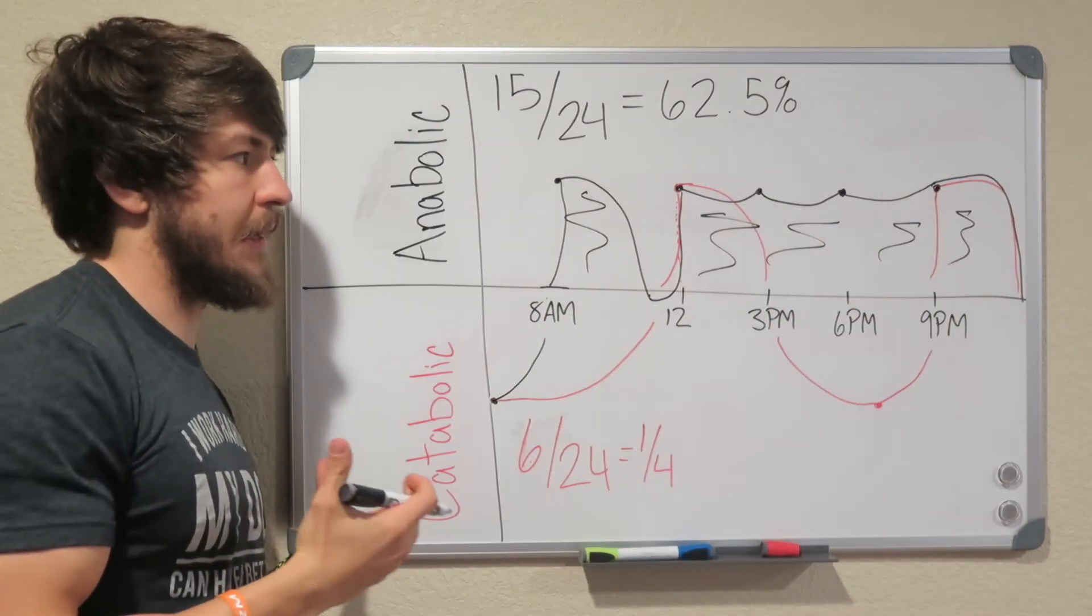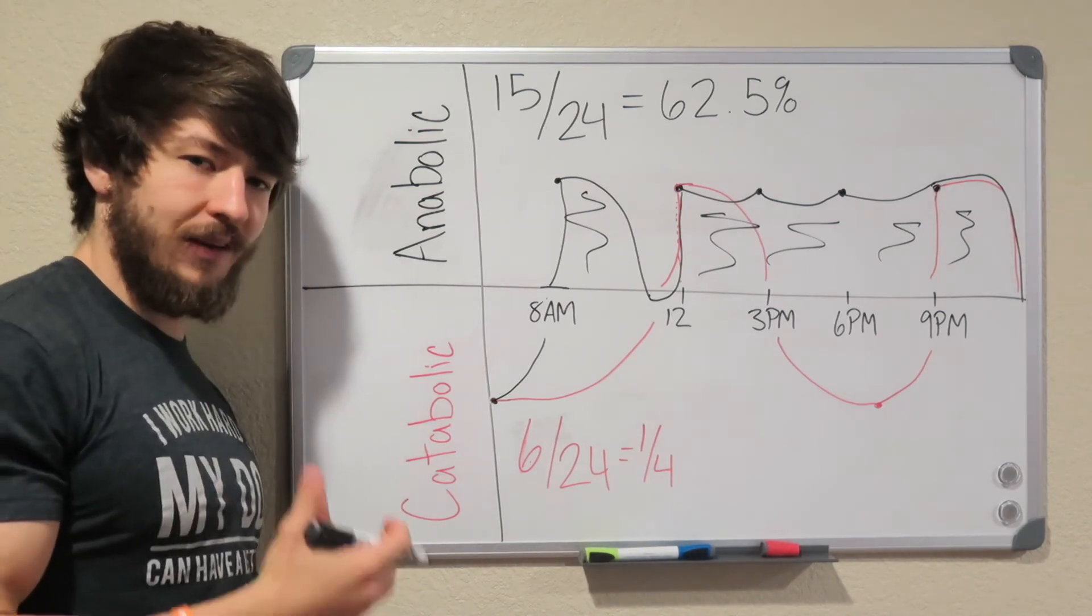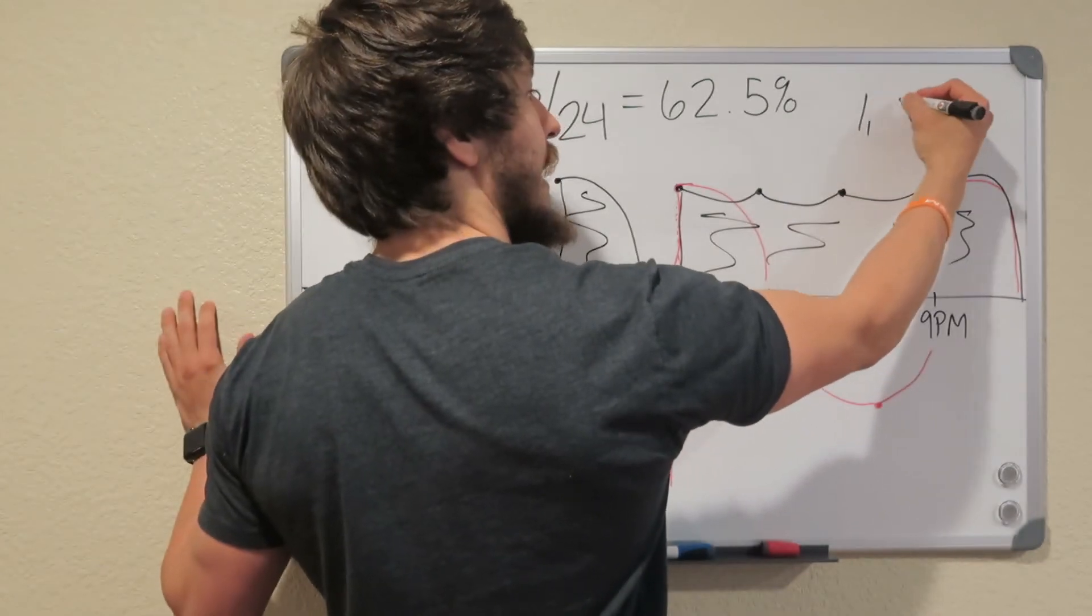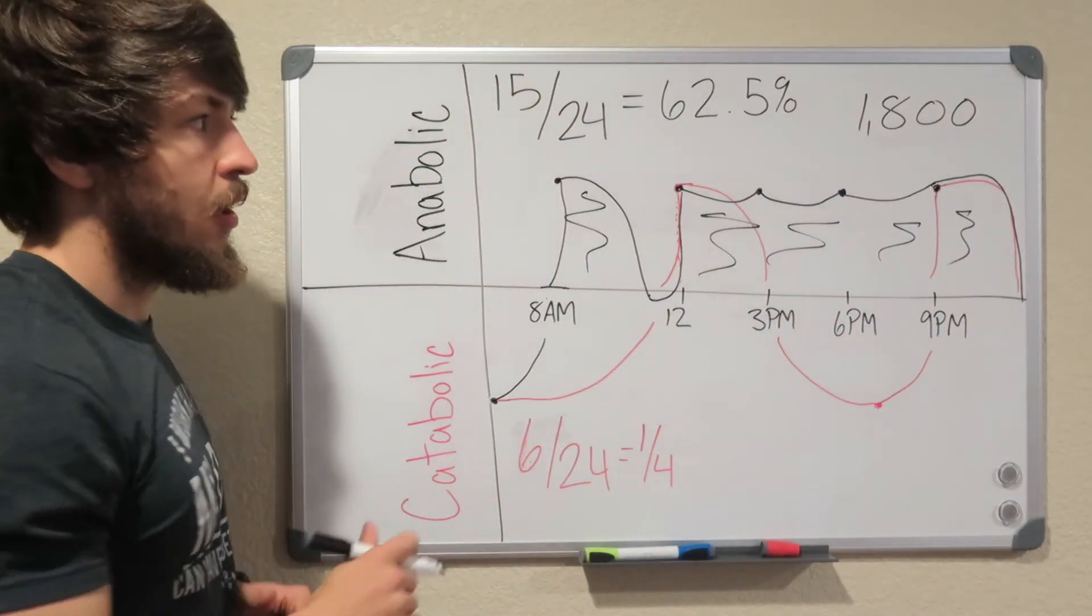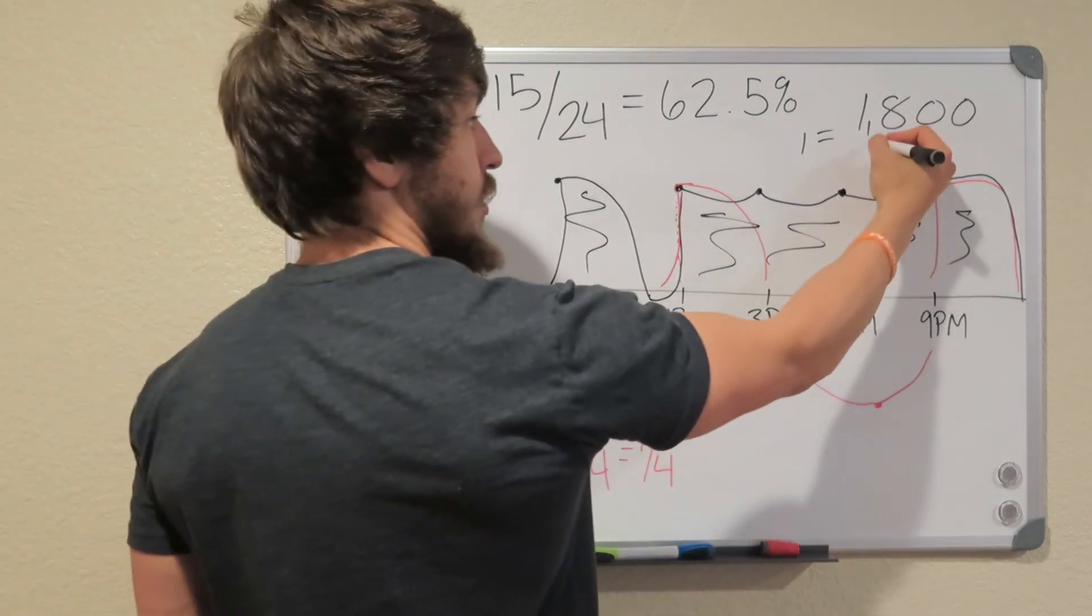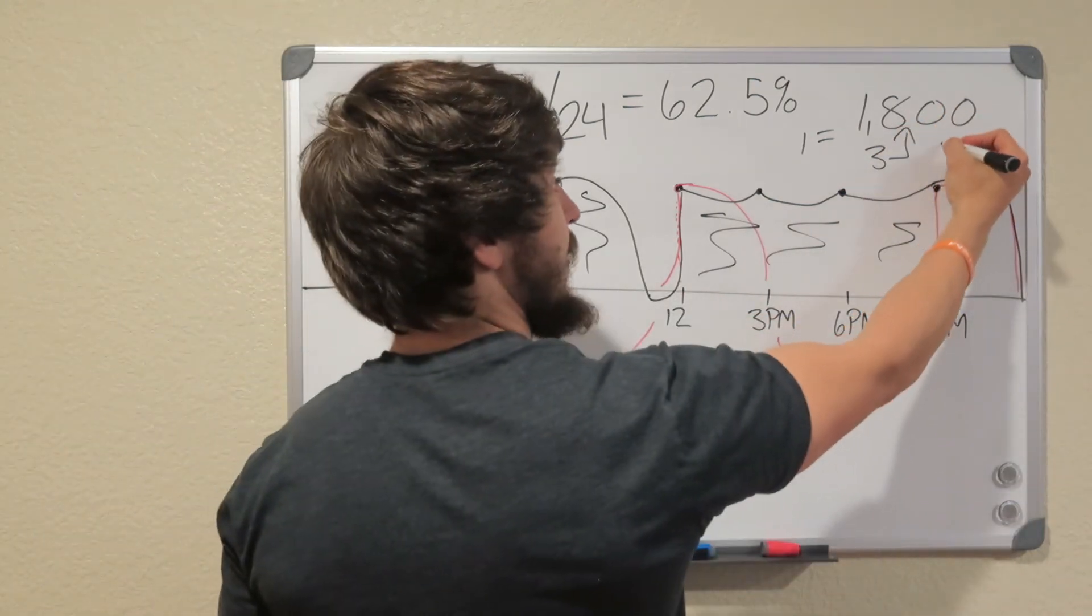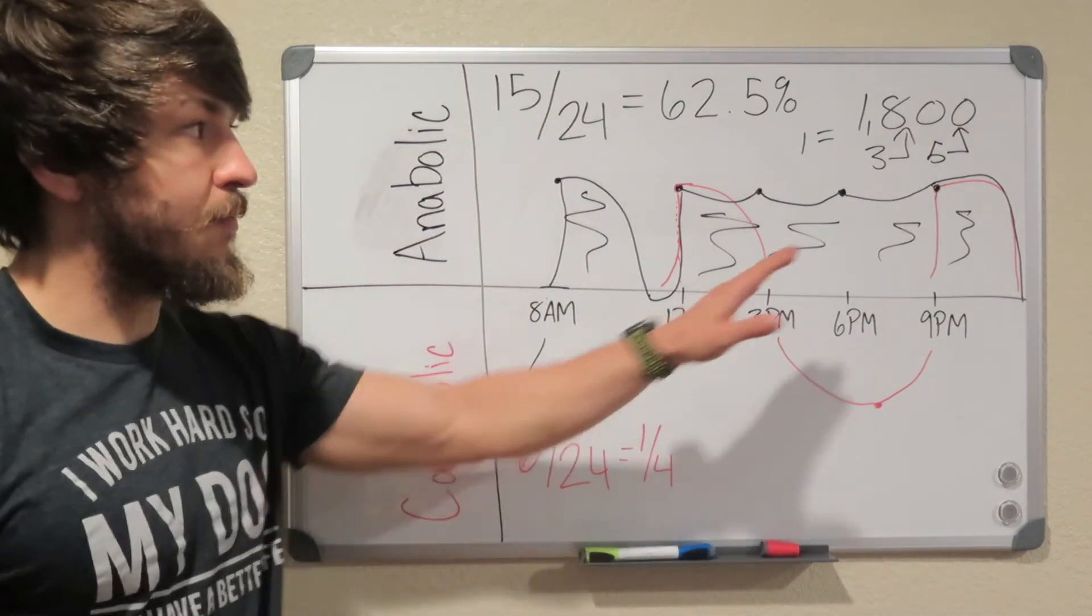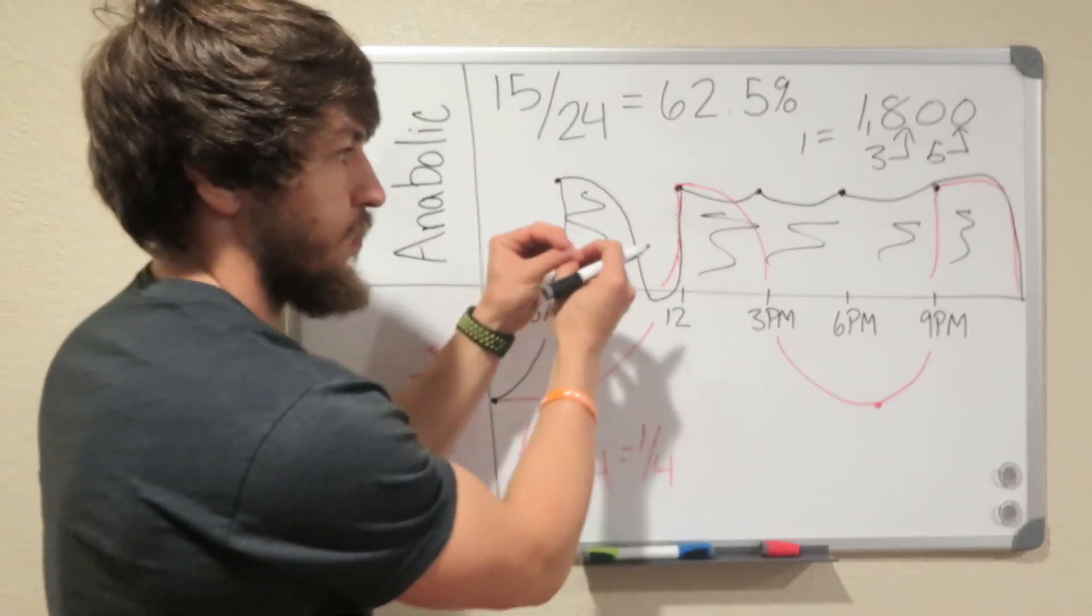So the biggest question I get though is, well, Roy, I don't want to eat that many meals because I don't want to eat that many calories. That scares me. Well, let's think about this. If your plan has you eating 1,800 calories a day, you can eat one meal and get 1,800 calories. You can eat three meals and get 1,800 calories. You can eat five meals and get 1,800 calories. Nobody's making you increase this number.